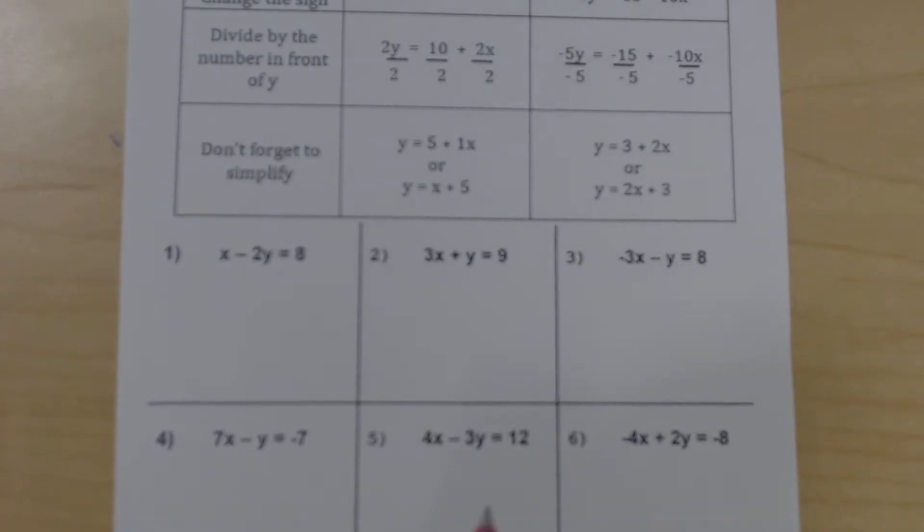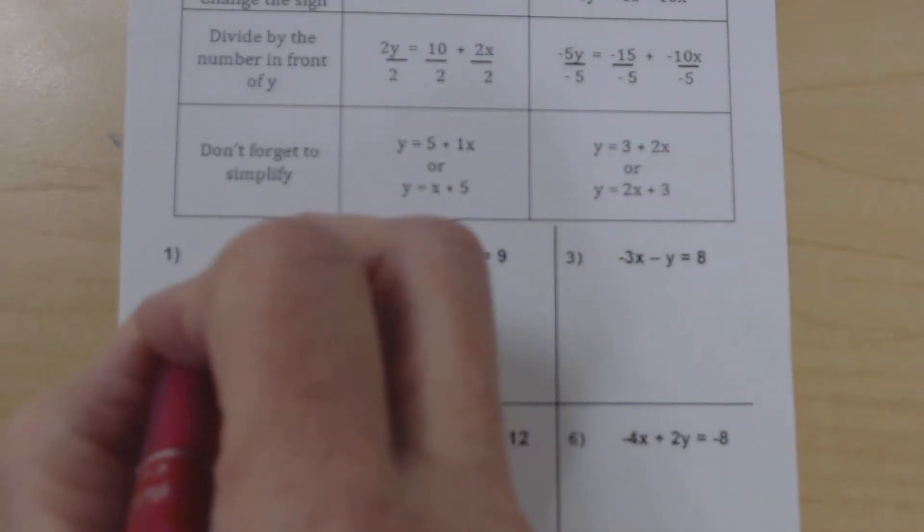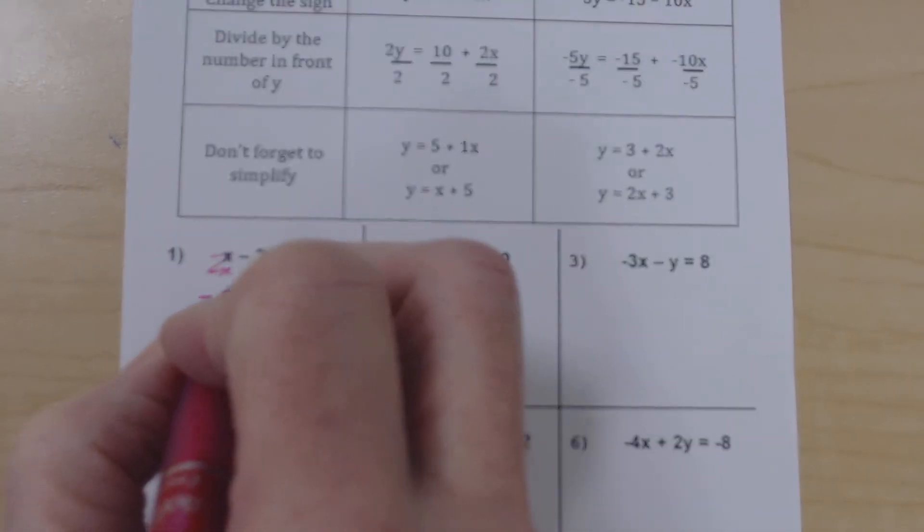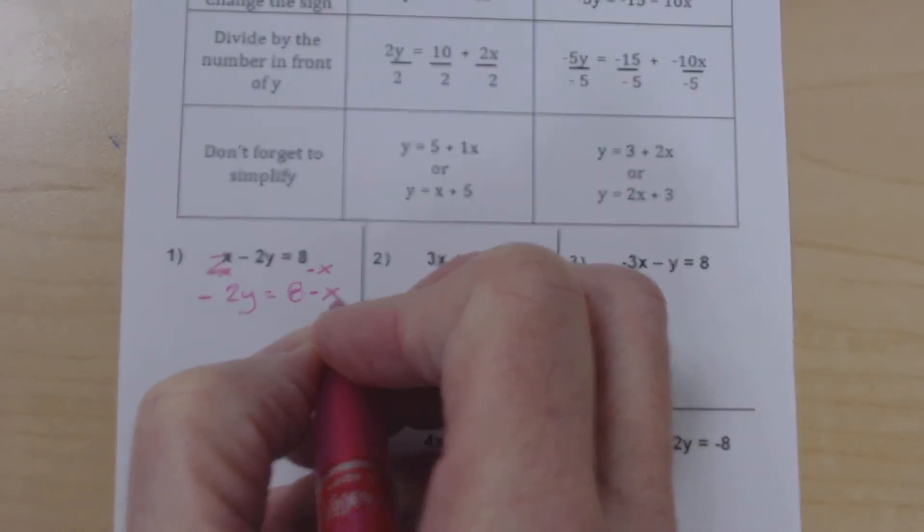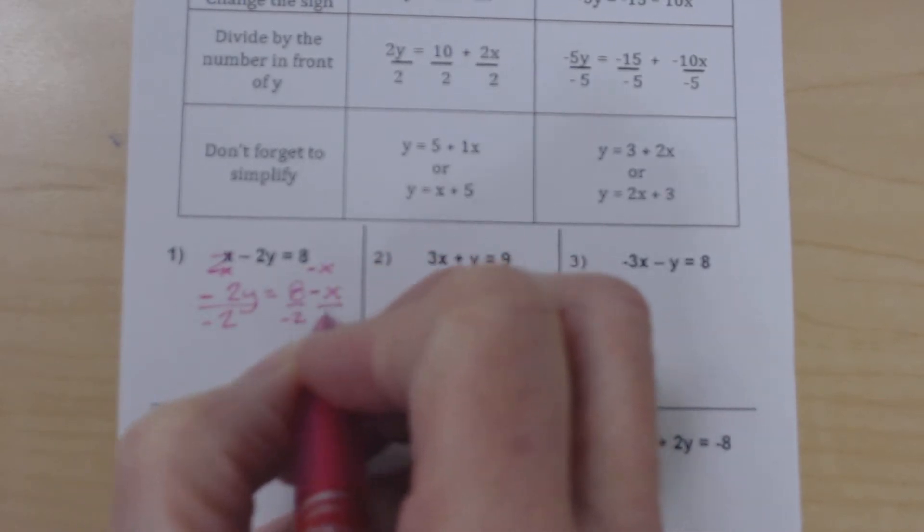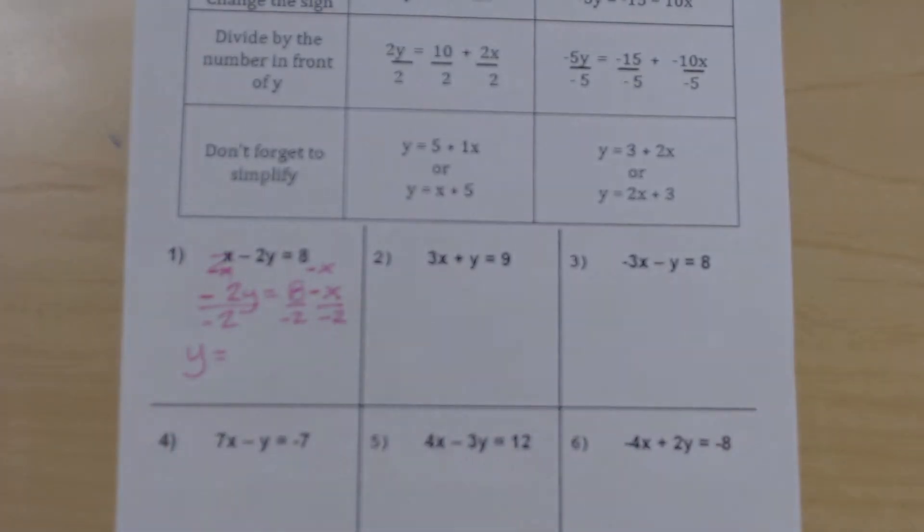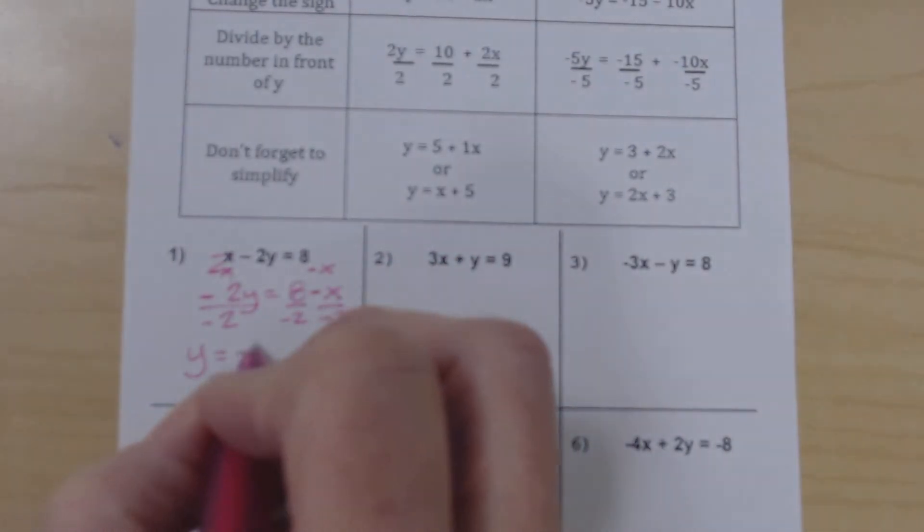So the example here is move the x, change the sign. So basically we are subtracting x from both sides. These end up zeroing out, leaving 8 minus x. Divide everything by what's in front of the y. These cancel out, leaving y. Now we're in our don't forget to simplify.